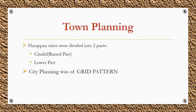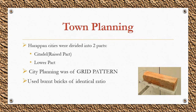No windows faced the streets. They used burnt bricks in an identical ratio of 1:2:4 in terms of thickness to width to length. The uniformity and average size of bricks was astonishing. They had a great drainage system with covered drains, each having a gentle slope so that water could flow through. The drains in the houses were connected to those on the streets, and smaller drains led into bigger ones. As the drains were covered, inspection holes were provided at intervals to clean them.